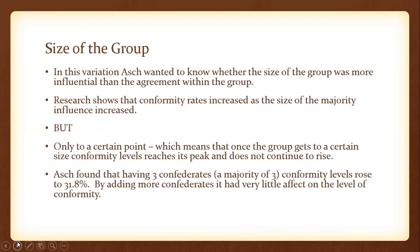Looking at Asch's findings, he replicated this variation from two confederates all the way up to 16 confederates. He found that when there were three confederates and one naive participant, conformity levels rose to 31.8%. In the original study with between five and six confederates, it was only 36.8% — so not much more. So really, once the majority was of three, conformity levels didn't rise much further beyond that.